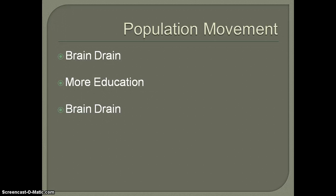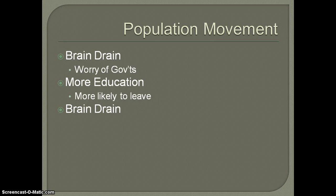When we talk about movement, there's a term called brain drain, which is of great worry to governments, whether local or national. Brain drain is when your most educated people are more likely to leave a place. More educated people are more desirable in the job market, and they're more aware of the opportunities that are out there. Especially in places that are not very well developed, they really want to keep their most educated there because those are the people most likely to help them move to new stages of development and bring better decision makers into the area.